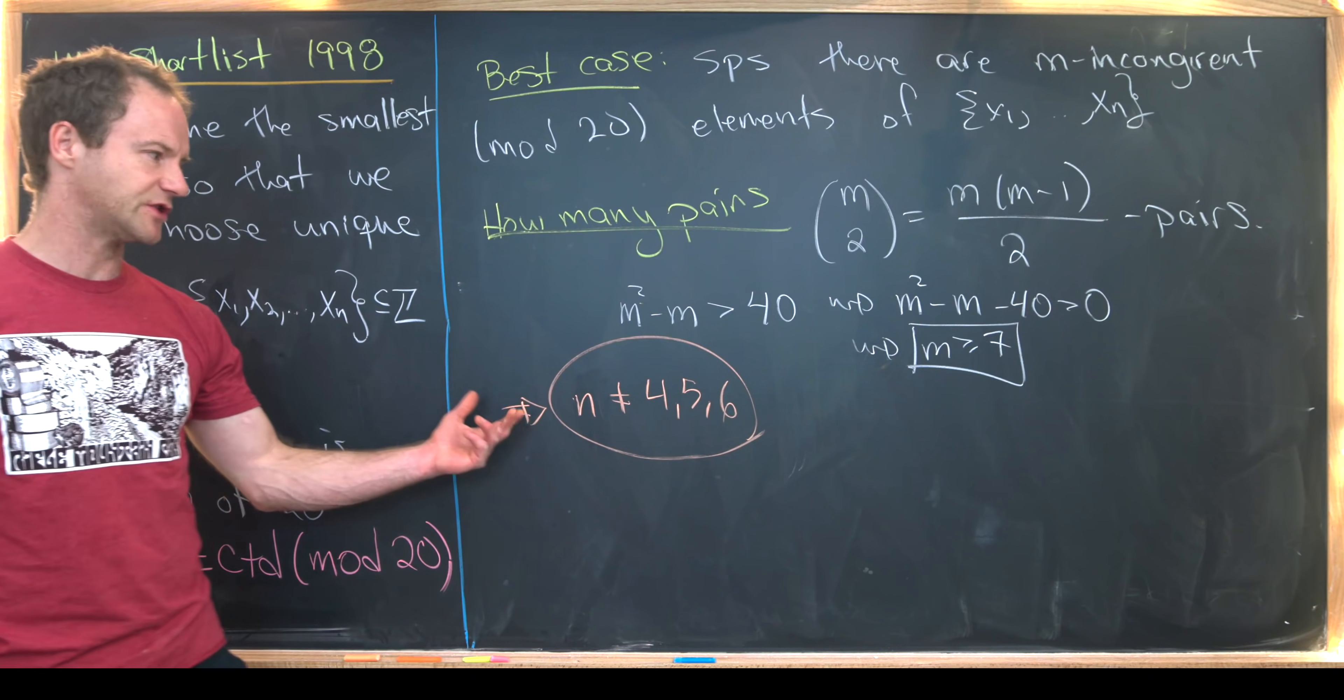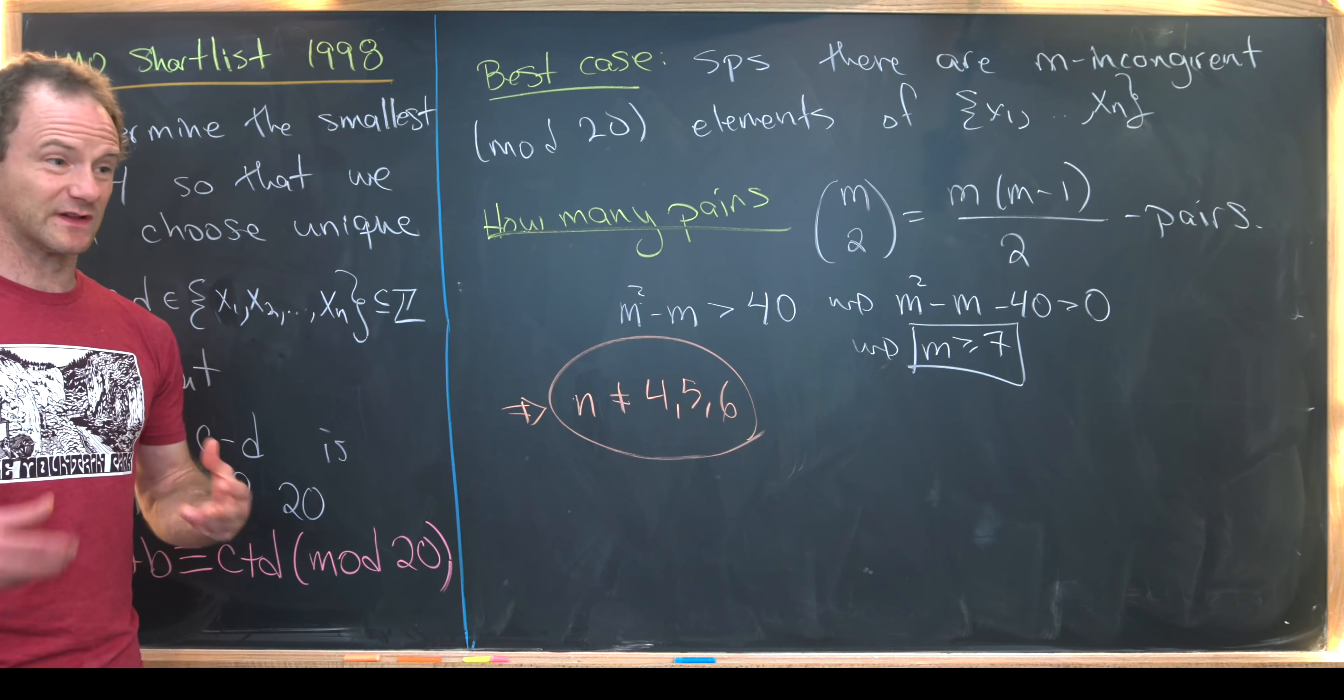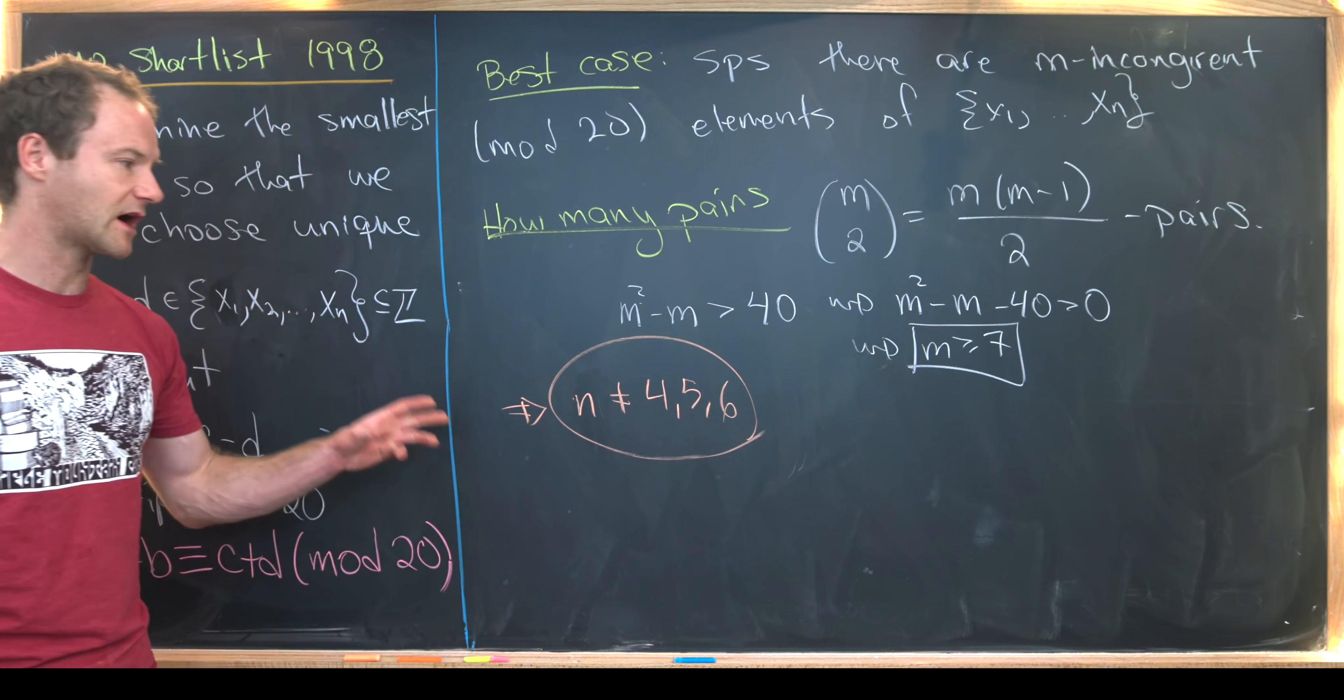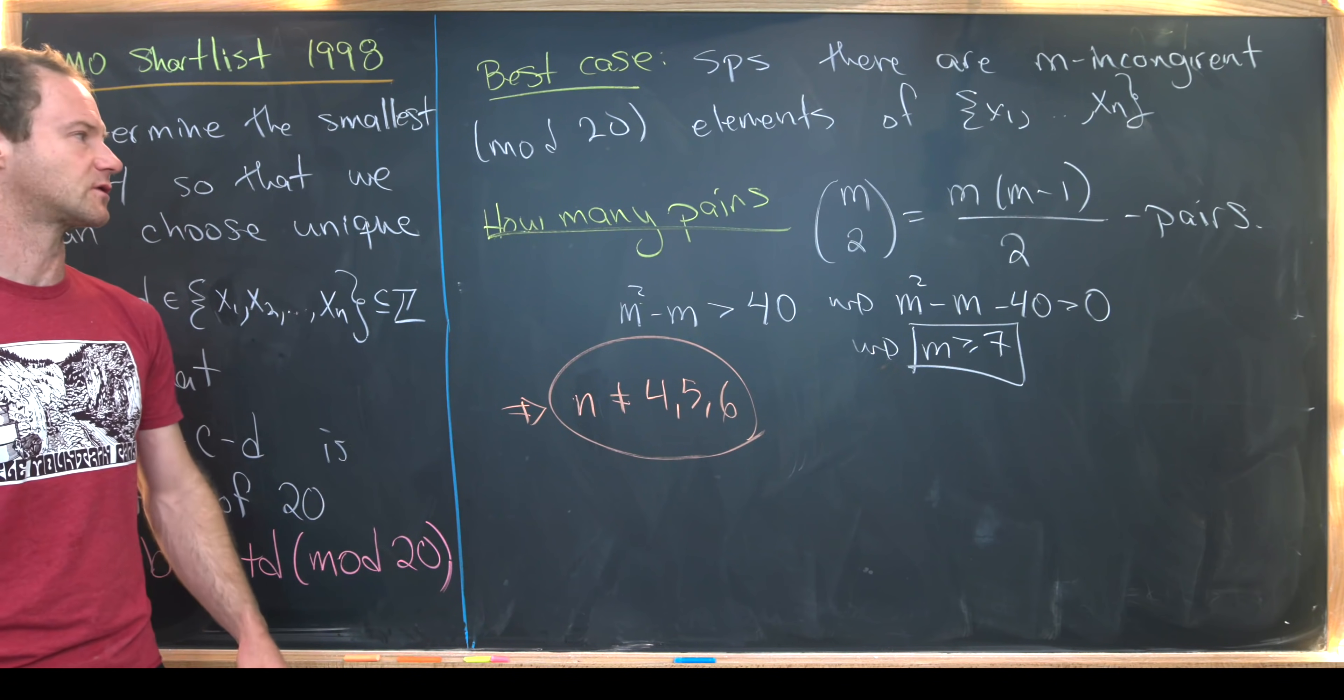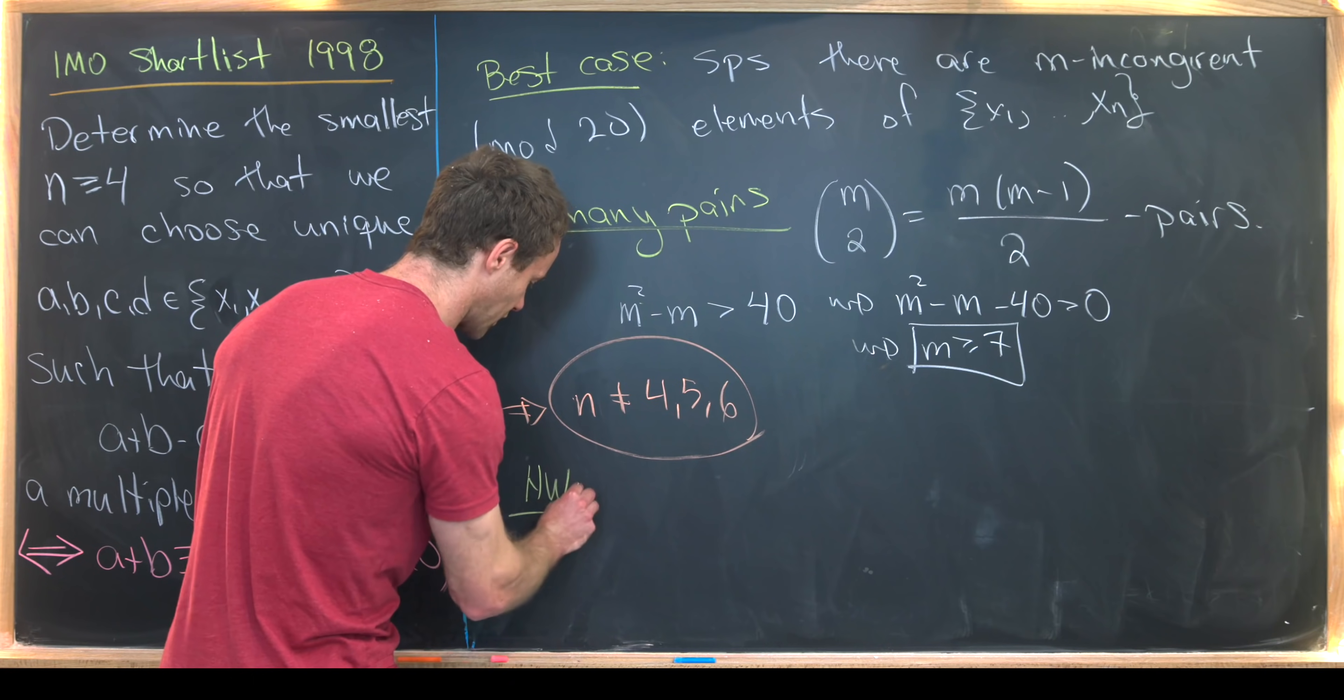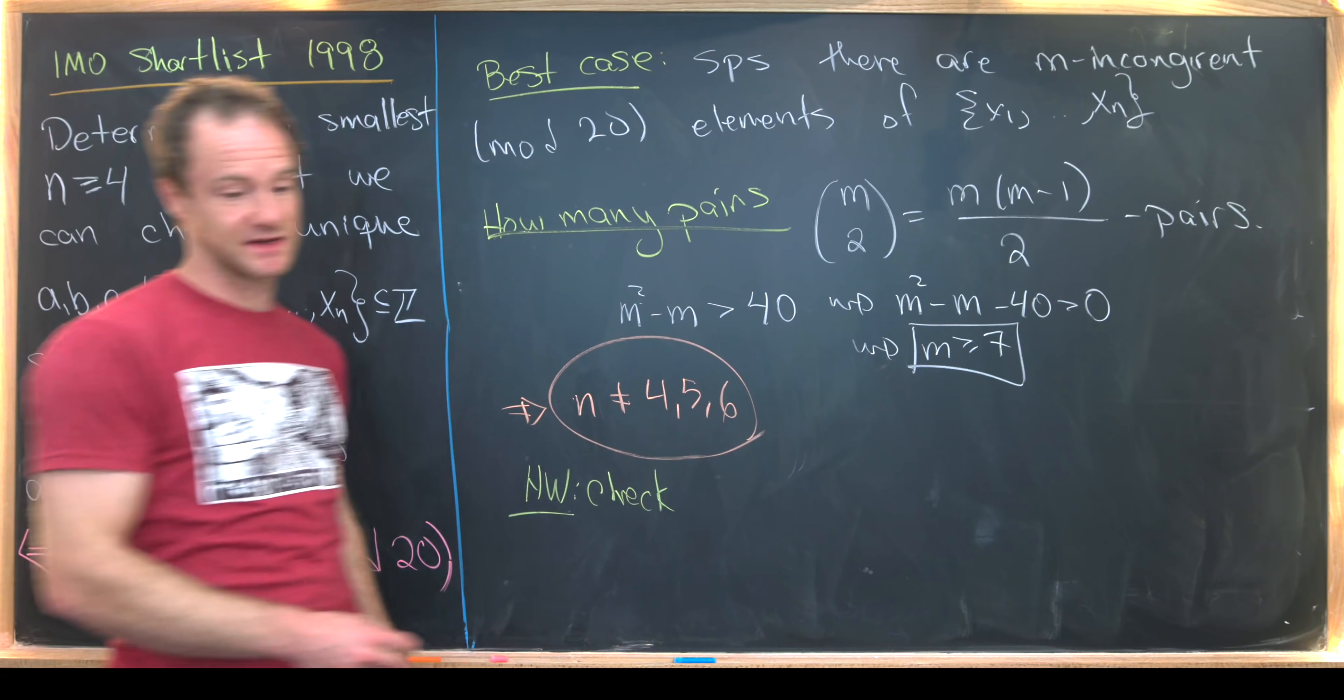So that means the smallest value is probably not seven or eight because that's not really large enough to guarantee all of this to work out. And so you might want to play around with n equals 7 and n equals 8 to try to find some sort of example of a set that does not exhibit this property.